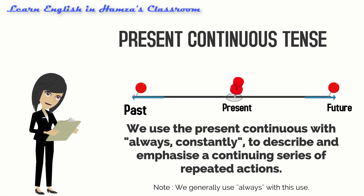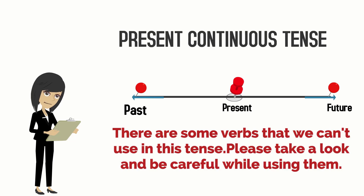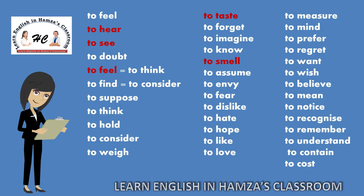We use the present continuous with 'always' and 'constantly' to describe and emphasize a continuing series of repeated actions. There are some verbs that we can't use in this tense — please take a look and be careful while using them. Verbs like 'see,' 'hear,' 'feel,' 'taste,' and 'smell' may be used in the continuous form, but with a different meaning.